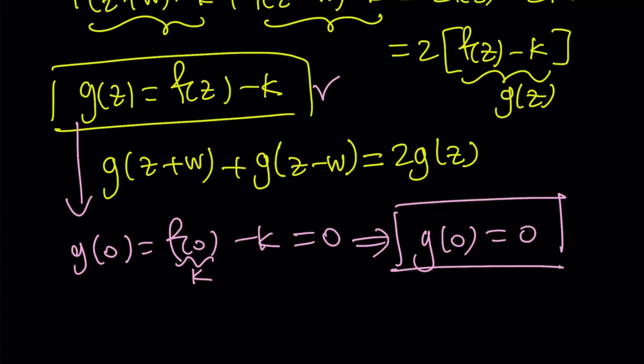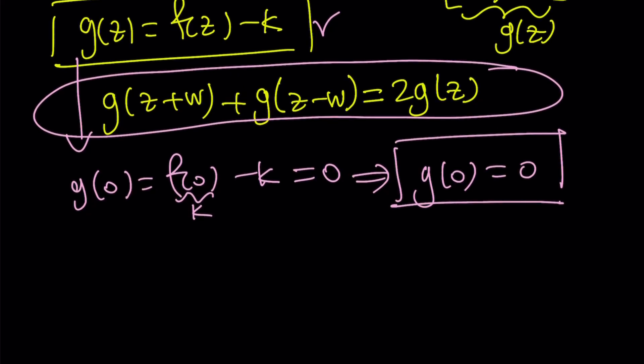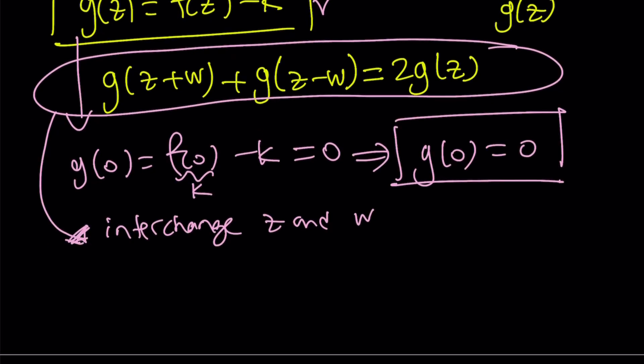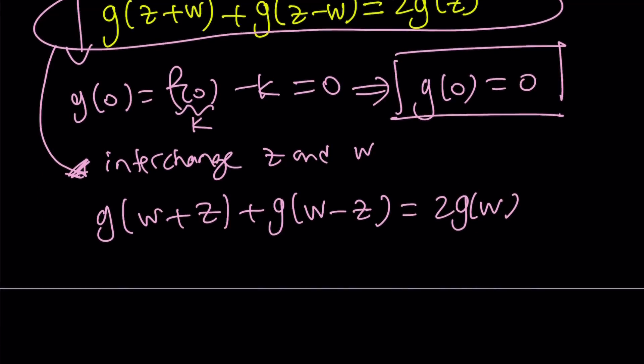Now we established that g(0) = 0. Let's go ahead and write our equation. We're going to manipulate this a little bit. I'm going to interchange z and w. That gives us the following: g(w+z) + g(w-z) equals 2g(w). And if you write our original equation, g(z+w) - by the way that's the same thing as g(w+z), it doesn't really matter - but this time I'm going to get g(z-w) = 2g(z). So I got a system of equations.